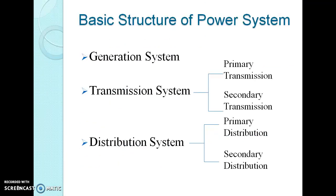First, we will see the basic structure of the power system. The power system constitutes a generation system, transmission system, and a distribution system. The power is generated from the generating station and it is transmitted then distributed through the transmission and distribution system respectively. The transmission system has primary transmission and secondary transmission as its categories. Similarly, the distribution system also has primary and secondary distribution.